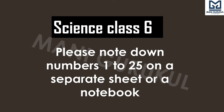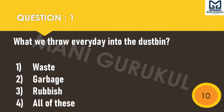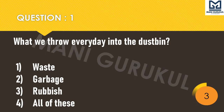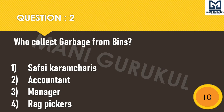Question 1: What do we throw every day into the dustbin? First: waste. Second: garbage. Third: rubbish. Or fourth: all of these. Your time starts now. Question 2: Who collects garbage from bins? You can check your performance and answers at the end.